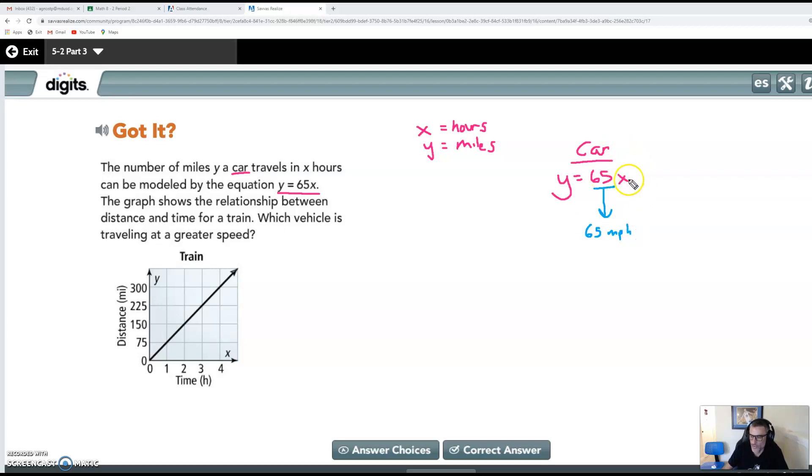What that is telling us is that the car is traveling 65 miles per hour. If the number of hours was one, we would have traveled 65 miles. If the number of hours was two, we would have traveled 130 miles and so on. So now they give us this graph that represents a train. And they want us to figure out from the graph, is the train going faster or slower than the car? So I need to write an equation and figure out what is this number for the train.